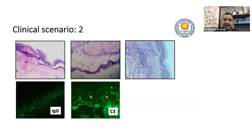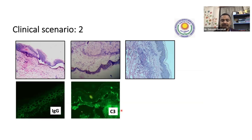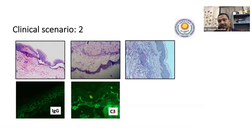We differentiate with immunofluorescence. If you have C3 as well as IgG in the dermoepidermal junction, we can say it is bullous pemphigoid. The epidermis is separated from the dermis, and you have dermoepidermal deposit of mostly C3 and IgG. But suppose you had neutrophils in the bulla, and instead of IgG and C3 you had IgA — then it becomes dermatitis herpetiformis. So IgG and C3: bullous pemphigoid; IgA deposit in the same location: dermatitis herpetiformis.